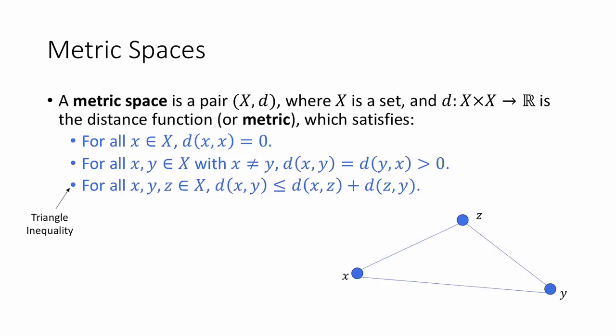So in order to talk about metric embeddings, we first need to define metric spaces. A metric space is just a pair (X, d), where X is a set, and d is a function that maps X × X to ℝ, the real numbers, and we think of d as being a distance function, or a metric, which satisfies the following properties.